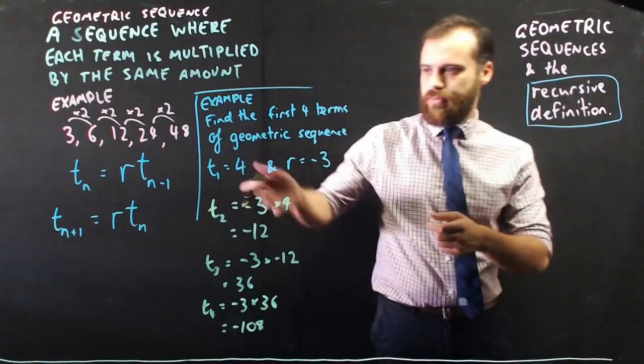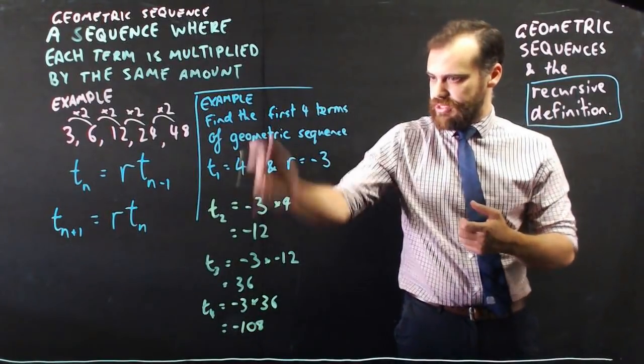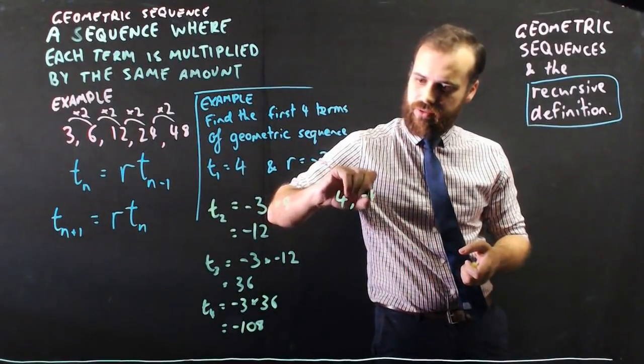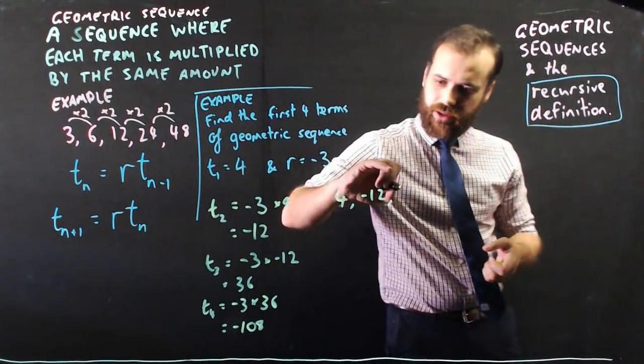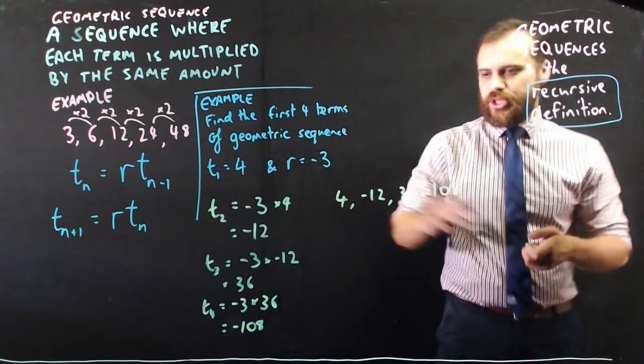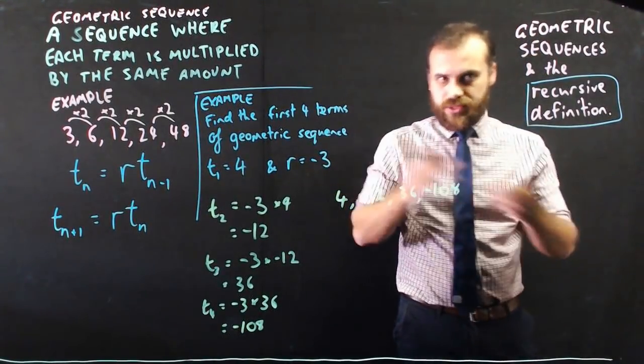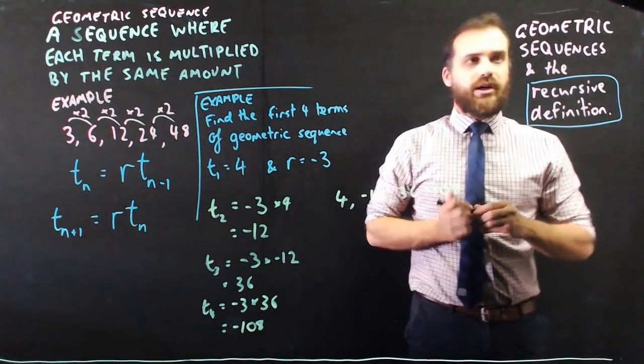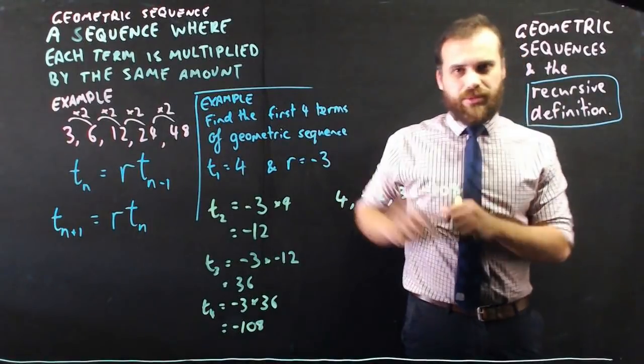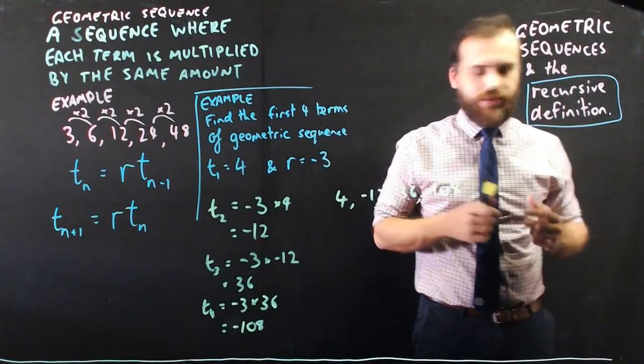So, finishing it all up, the first four terms of this sequence is 4, negative 12, 36, negative 108. Bit of a special one there, bounces backwards between positives and negatives. Alright, there's the geometric sequence common ratio, here's the recursive definition, we're going to come up with a better formula a little later on.